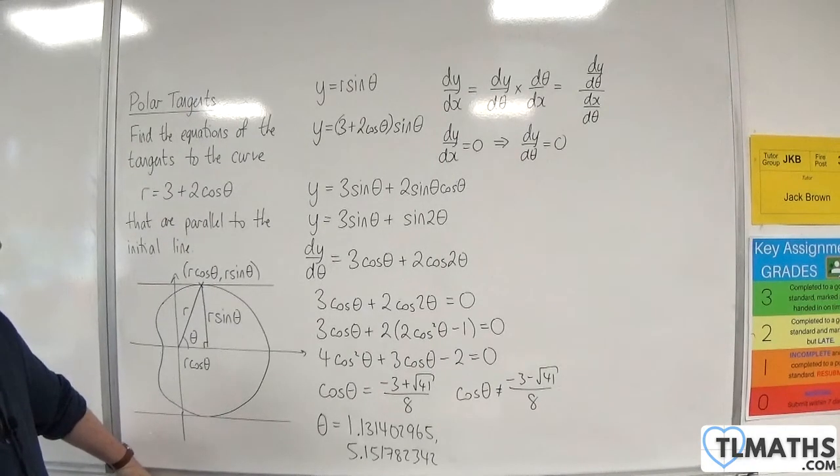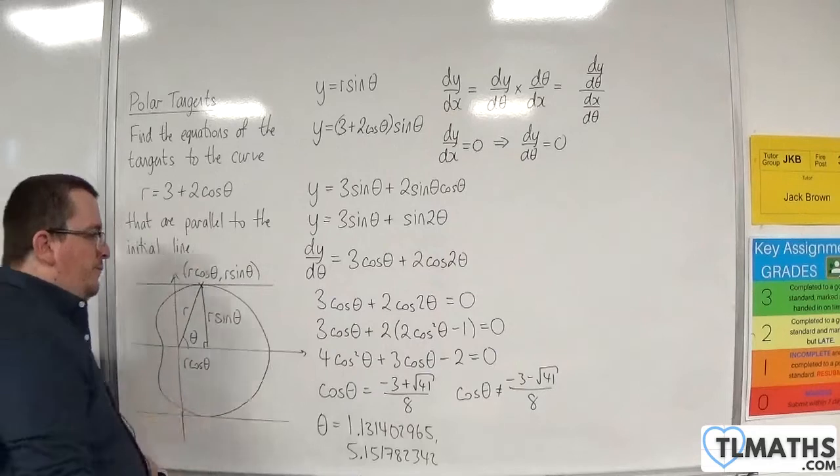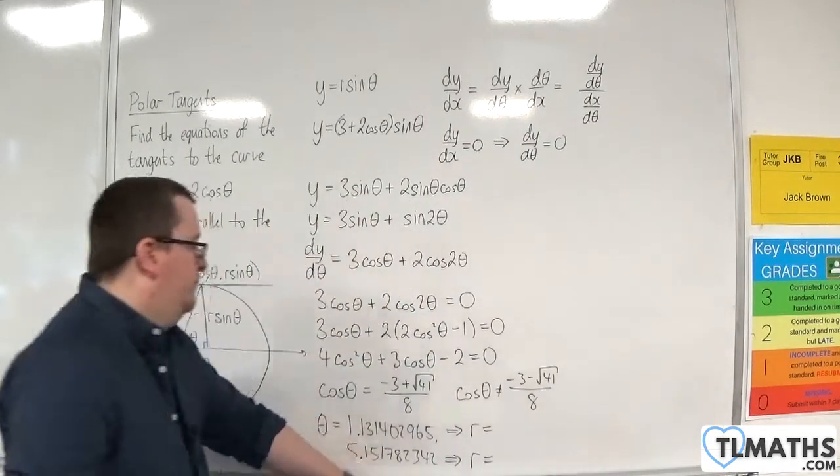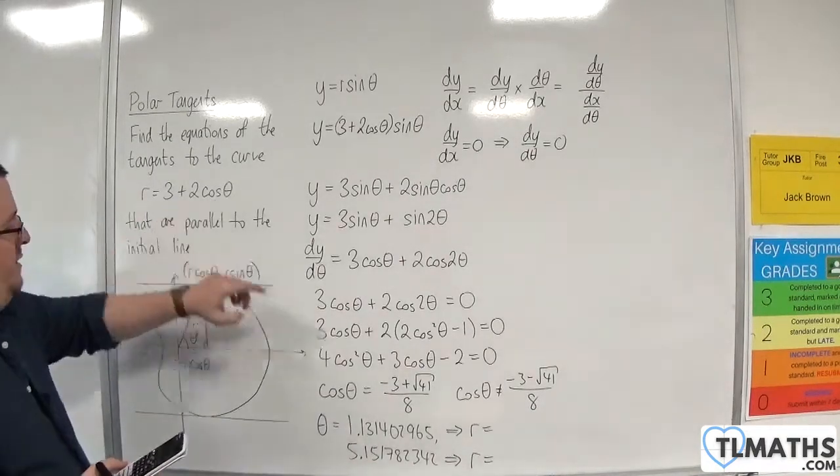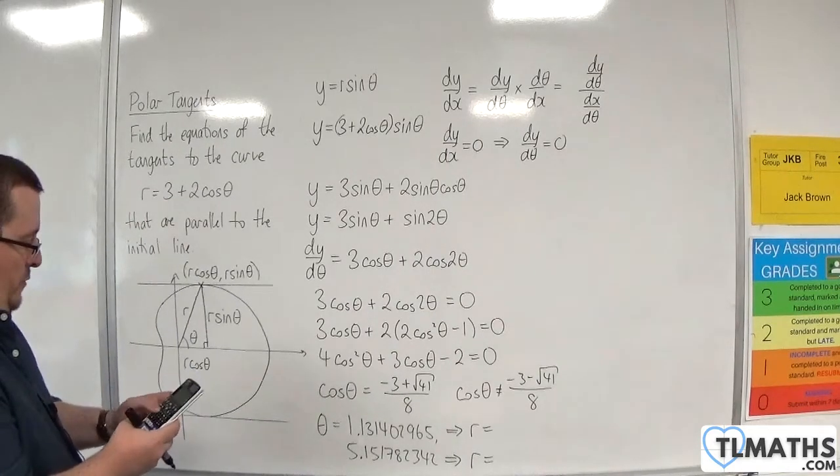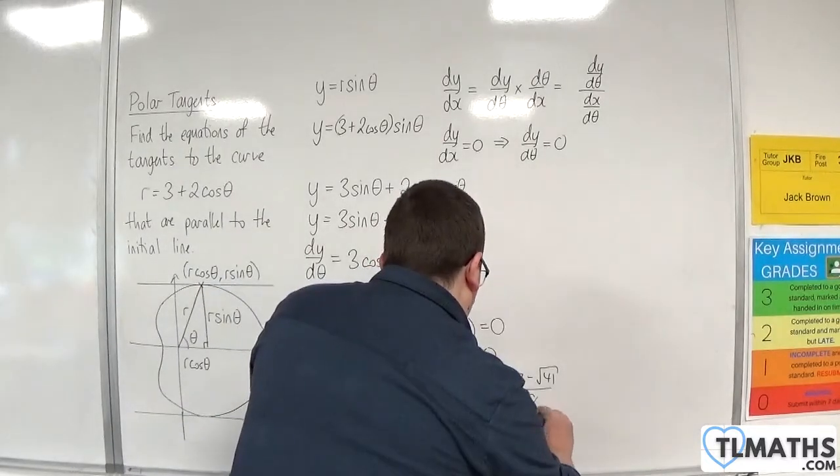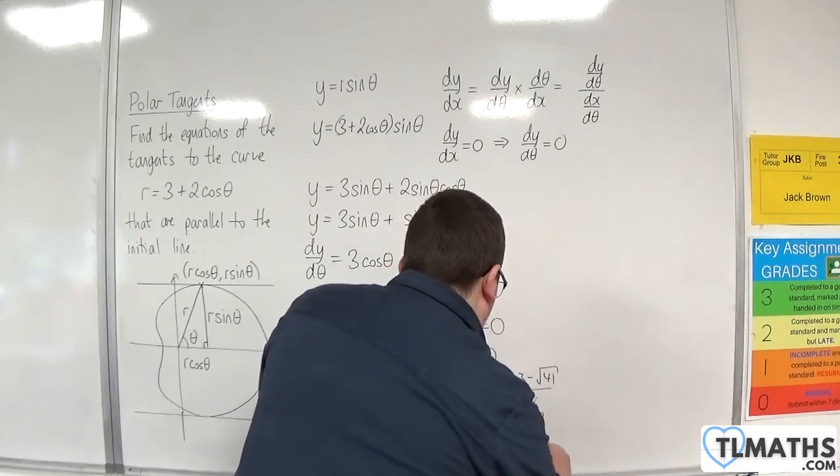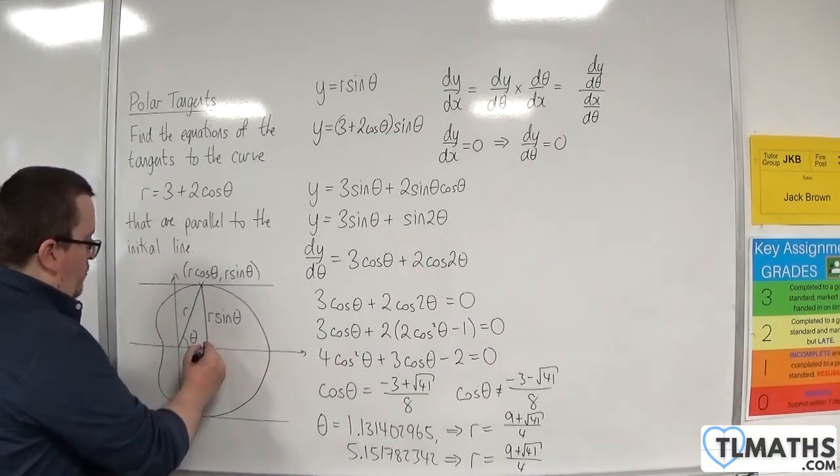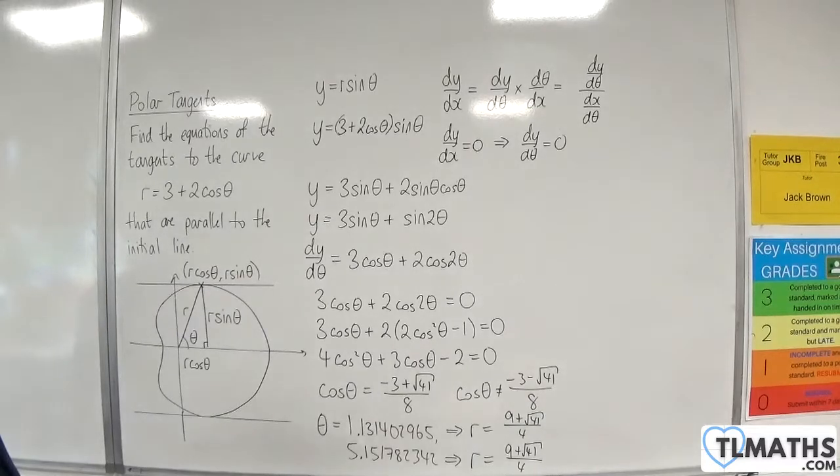So, I've got my value of theta. So, that means I can now work out the corresponding value of r. So, cosine theta. I can substitute the exact value into that. So, 3 plus 2 lots of minus 3 plus root 41 over 8. And we get 9 plus root 41 over 4. And, of course, you would get exactly the same thing for that one. Because they both come from cosine theta is that. And it would probably be unsurprising that you're getting the symmetry of the graph here. Okay. That they are the same distance. So, they're my values of r.